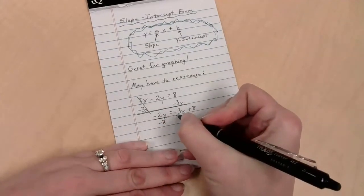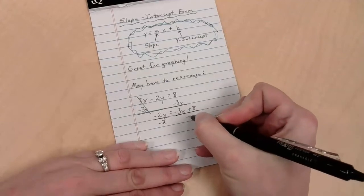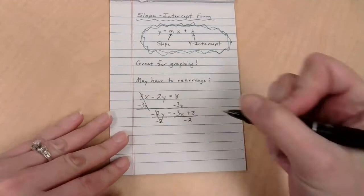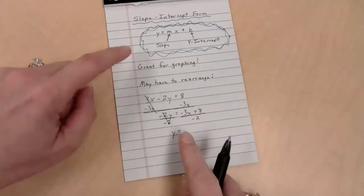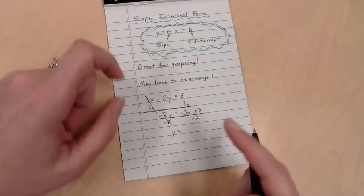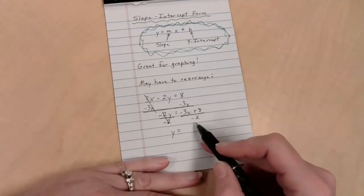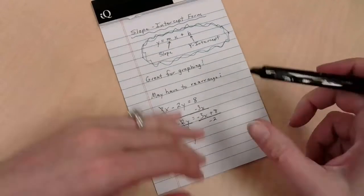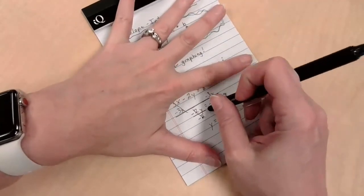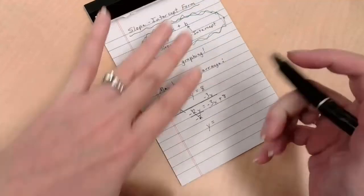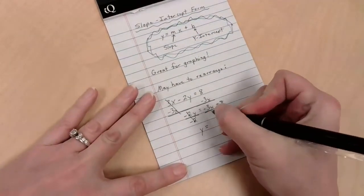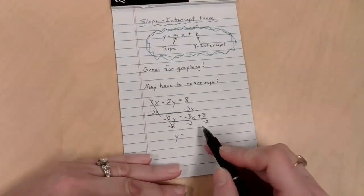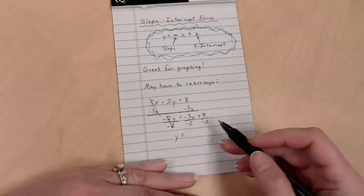We almost have the y by itself. But until we get the y by itself, we're not done. This is a negative 2 times y. Dividing by negative 2 will undo. Now here's where we've got to be really careful, because we're going to divide everything by negative 2. Everything.